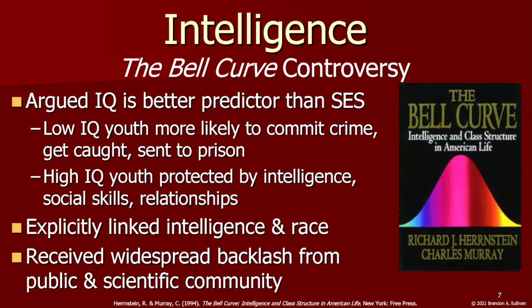The most controversial publication in this area undoubtedly was The Bell Curve, written by Richard Herrnstein and Charles Murray in 1994. They argued that the outcomes for youth who were at risk for crime were largely determined by their intelligence. Low IQ youth are more likely to commit crime, get caught, and sent to prison, whereas high IQ youth are protected by their higher intelligence, allowing them to succeed in school and build key social relationships to avoid criminal behavior. Even more controversial were explicit connections made between intelligence and race, along with policy recommendations such as cutting off social assistance from women with low IQs to discourage them from having children, and reducing immigration from poorer countries, primarily those with mostly non-white populations, because their lower intelligence made them unlikely to succeed in the U.S.